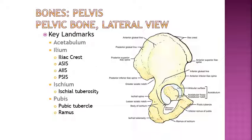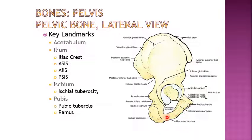Here is a lateral view of the pelvic bone. Key landmarks include: the acetabulum, and on the ilium — the iliac crest, ASIS (anterior superior iliac spine), AIIS (anterior inferior iliac spine), and PSIS (posterior superior iliac spine). On the ischium, a key landmark is the ischial tuberosity, along with the ischial spine and the lesser sciatic notch. On the pubis, you have the pubic tubercle and the pubic ramus. The ischium encompasses everything from the ischial spine around through the ramus of the ischium, which is continuous with the inferior ramus of the pubis.